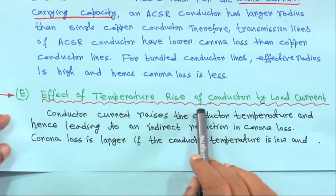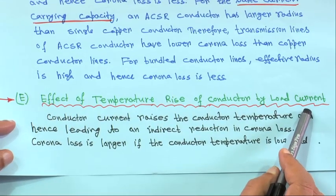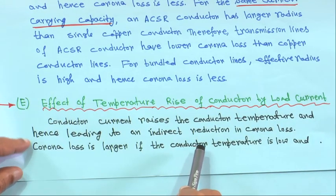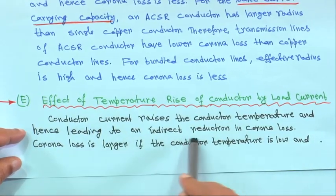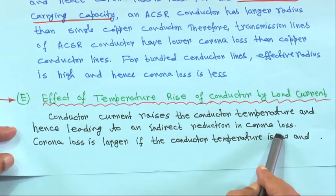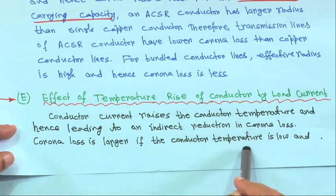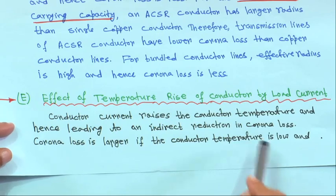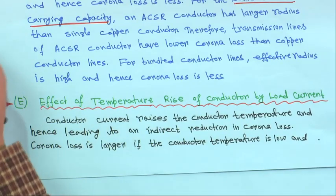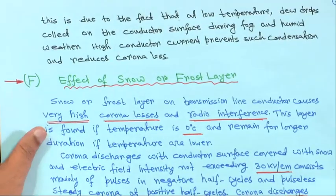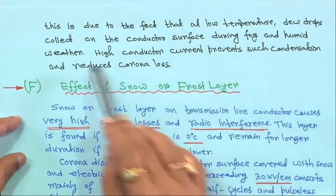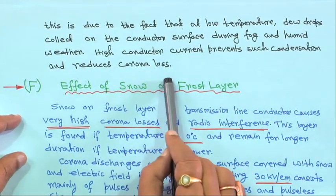Another factor is the effect of temperature rise of the conductor due to load current. When load is high, the conductor carries more current, causing a temperature rise. This leads to an indirect reduction in corona loss. Corona loss is larger when conductor temperature is low, because at low temperature dew drops collect on the conductor surface during fog and humid weather. High conductor current prevents such condensation and thus reduces corona loss.